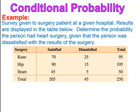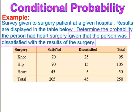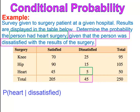Next, determine the probability that the person had heart surgery given that the person was dissatisfied with the results of the surgery. Dissatisfied is the total of 45, so we use that as our total. Then we look for the heart surgery dissatisfied count: 5. So 5 divided by 45, which is approximately 0.11.